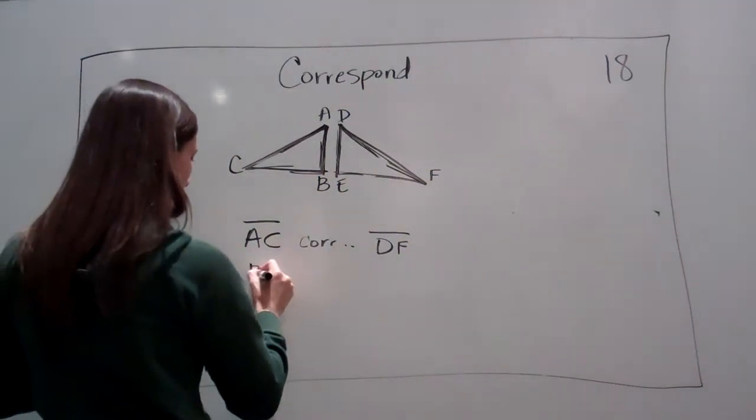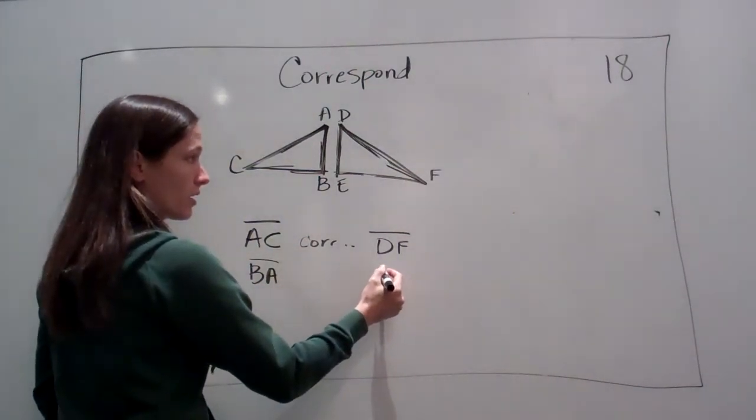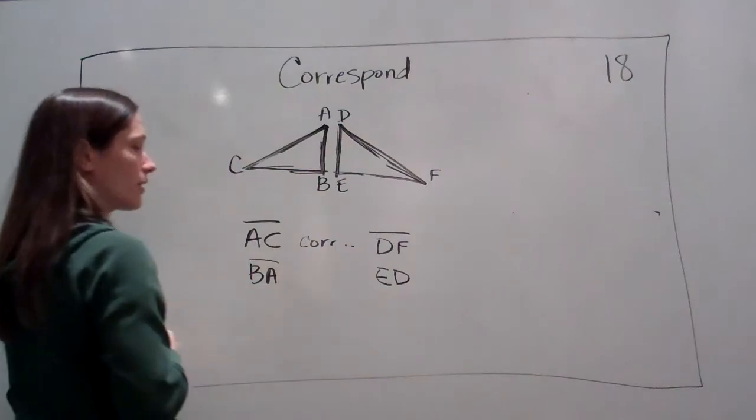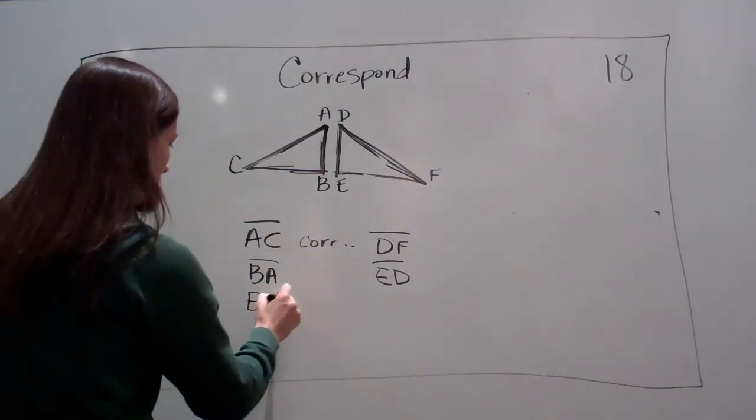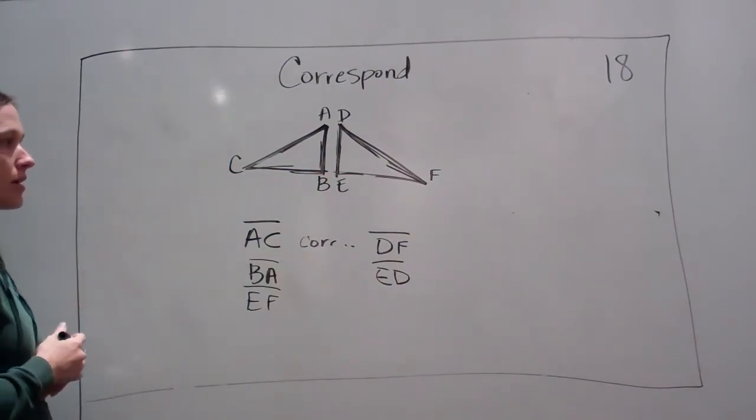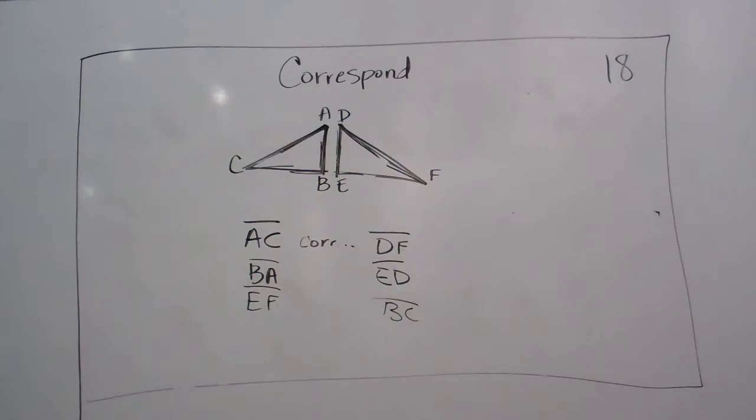What about BA? Line BA corresponds with ED. Very good. Okay. Line EF corresponds with BC. Everybody feel like they understand what corresponding means? Good.